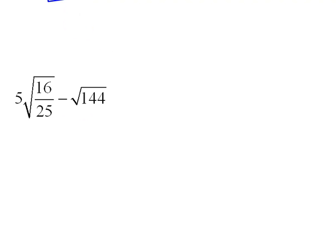Let's do one more here. Again, we need to work with our radicals first, because they're like grouping symbols. So this would be 5, and this literally says 5 times this square root. When we're doing square roots of fractions, we can do the top and then the bottom. So the square root of 16 would be 4, and the square root of 25 would be 5. And we have minus the square root of 144 would be 12.